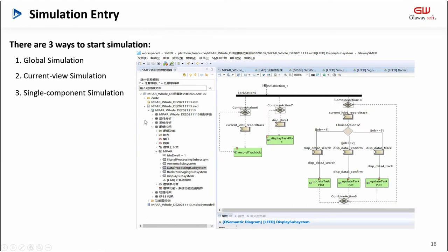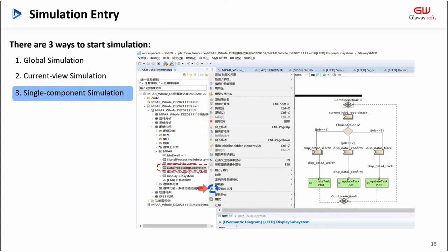For simulation in different scopes, such as the entire model, a single model, and a single diagram, we provide three simulation portals. They are: global simulation, which can make all models at this level start to simulate; current view simulation, which can make the current view perform simulation; and single component simulation, which can make the dynamic view under the component start simulation.